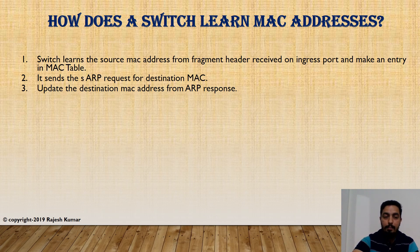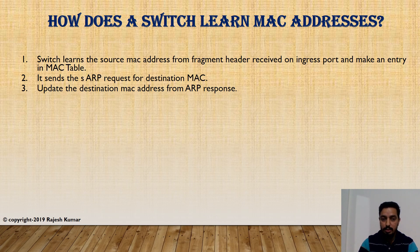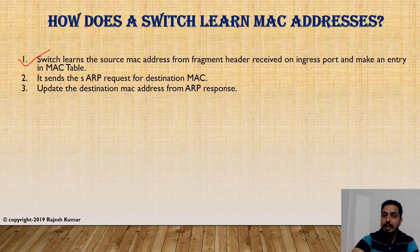The first step: once the switch receives the frame from a neighbor device, it looks at the frame header — specifically the source and destination MAC address, where the frame was received from and where it is destined to. Looking at this source and destination information, it adds that information into the MAC table. In some cases, the destination MAC address is not present in the frame header; in that case, the switch will send an ARP request for the destination MAC address.